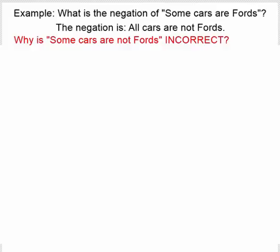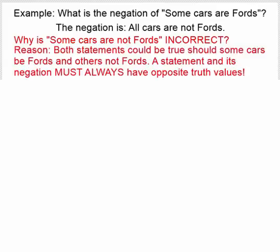You have to realize that a negation of a statement and the statement always have to have opposite truth values. If one is true, the other has to be false, and if one is false, the other has to be true. And if our negation was 'some cars are not Fords,' in the event that some cars were Fords and some were not, both of these statements could be true. If half the cars were Fords and half were Chevys, then it would be true that some cars are Fords, and it would also be true that some cars are not Fords. You can't have a statement and its negation having the same truth value.